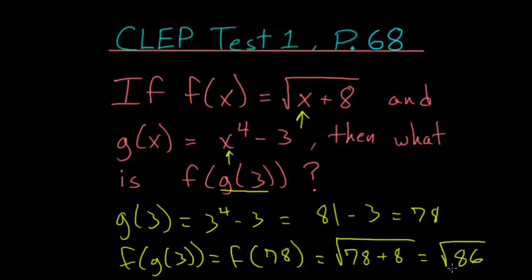Since 86 is just 2 times 43, and both of those numbers are prime, we can't simplify the square root any further. So the square root of 86 would be our final answer.